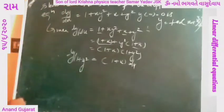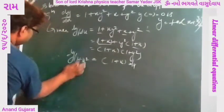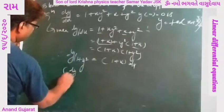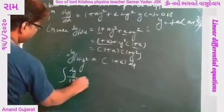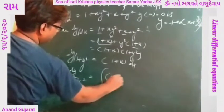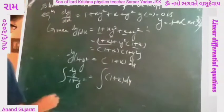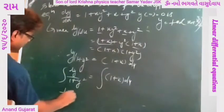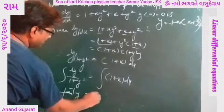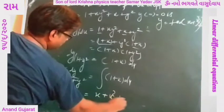Now integrating both sides, we get the integration of dy/(1 + y²) = integration of (1 + x) dx. The integration gives tan⁻¹y = x + x²/2 + c.